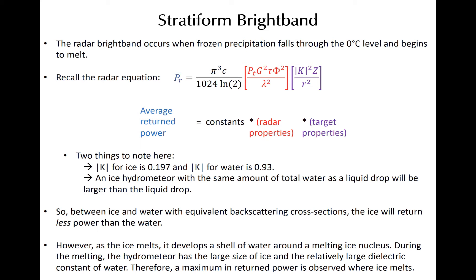The bright band is a layer of enhanced reflectivity that occurs as frozen precipitation falls through the zero degrees sea level and melts. Consider the weather radar equation seen earlier in this lecture series. The power received at an antenna is a function of the properties of the radar, which remain constant, and properties of the target. The radar processor must assume some dielectric constant k when converting from received power to reflectivity. However, the dielectric constant for water is almost five times that of ice, meaning that between the same sized ice and water hydrometeors, the ice would return less power than the water.